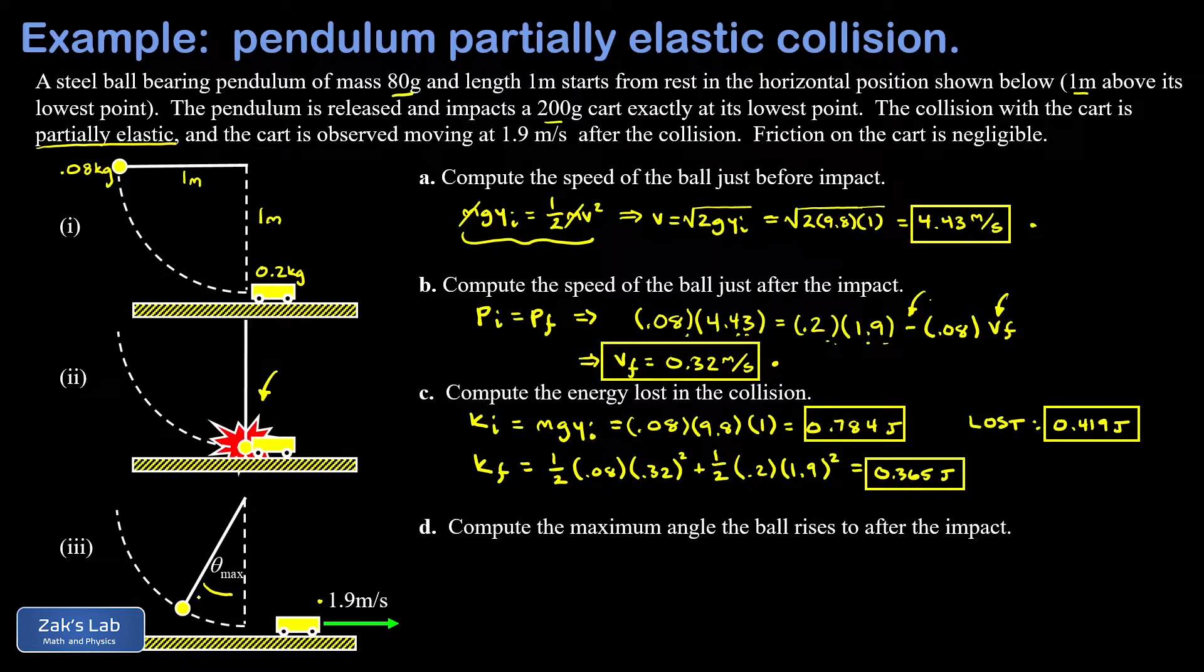We'll start by getting that maximum Y value using energy conservation. The kinetic energy after the impact, when it's moving to the left, that's one half MV squared, where V is 0.32. That's all going to be converted into the gravitational potential energy in the final state when it's at that maximum angle. The M cancels out and we solve for Y final, and that's V squared over 2g. We plug in the numbers to three significant digits: we get 0.00522 meters or 5.22 millimeters.